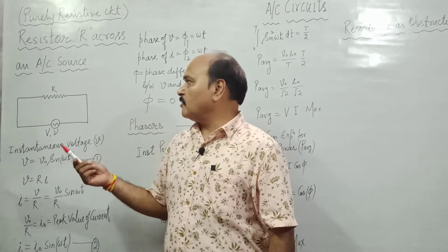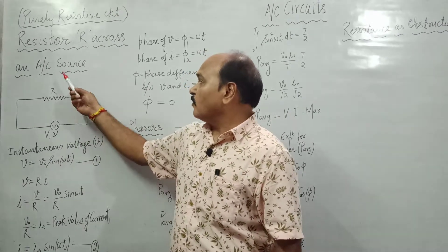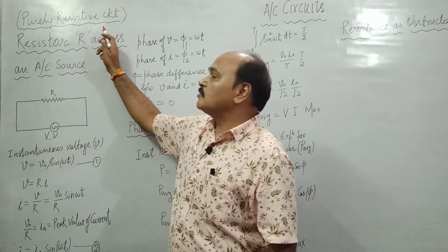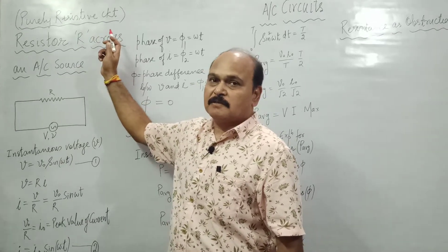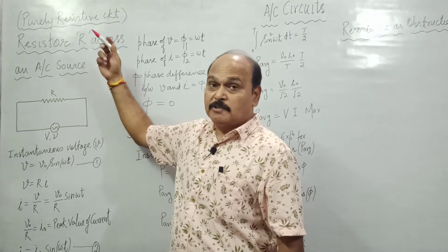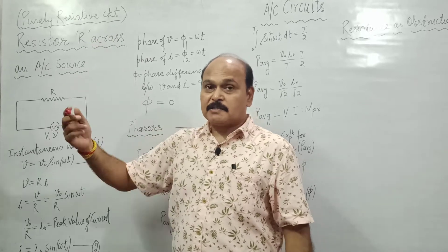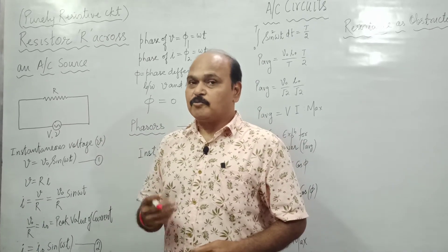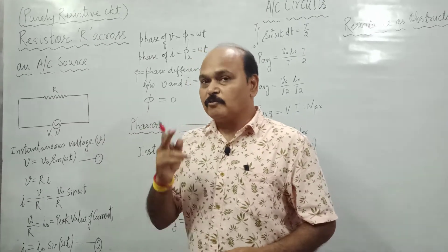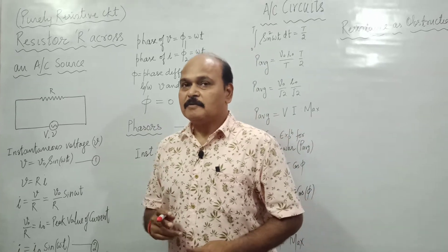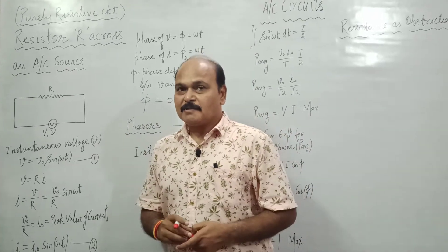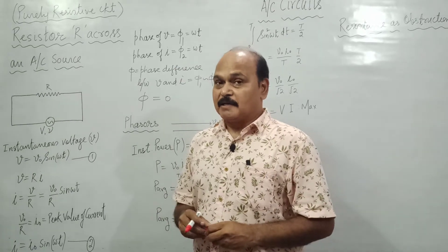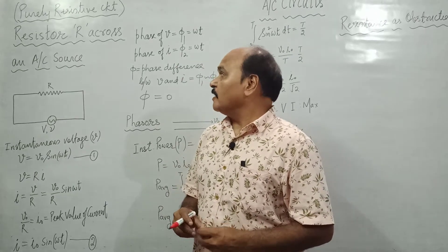Resistance across an alternating source is called a purely resistive circuit. Resistance is the only device we have been knowing so far — up to class 10th we know only one device as load. But as we come to class 12th, there are two more devices: capacitor and inductor.